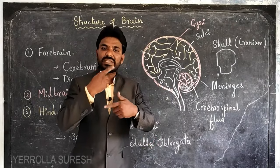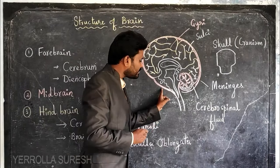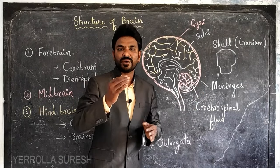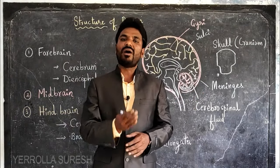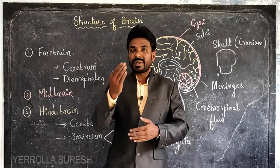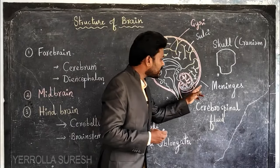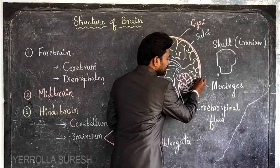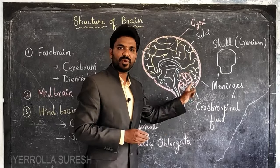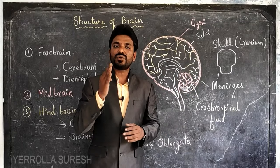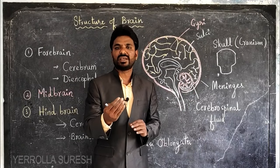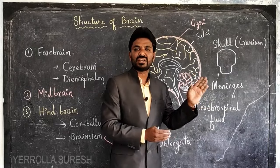The brain is also covered by three layers around it. The layers which cover the brain are called meninges — they give protection to the brain. Inside the meninges there is a fluid called cerebrospinal fluid. That cerebrospinal fluid protects the brain from external pressures, shocks, jerks, and injuries.